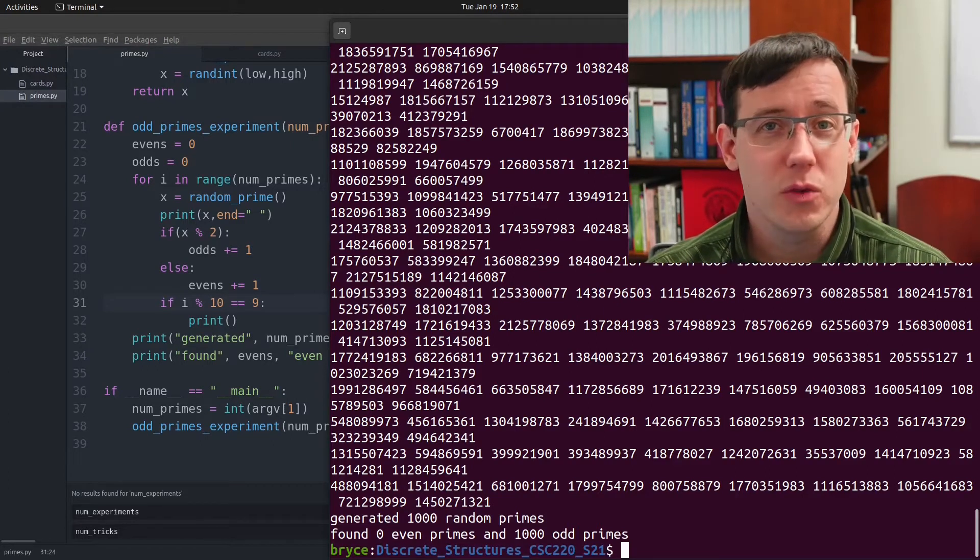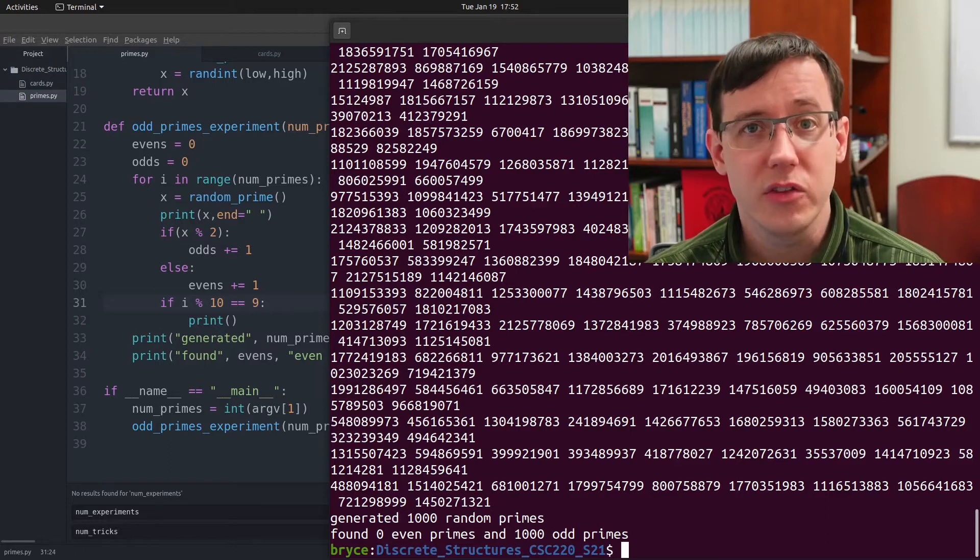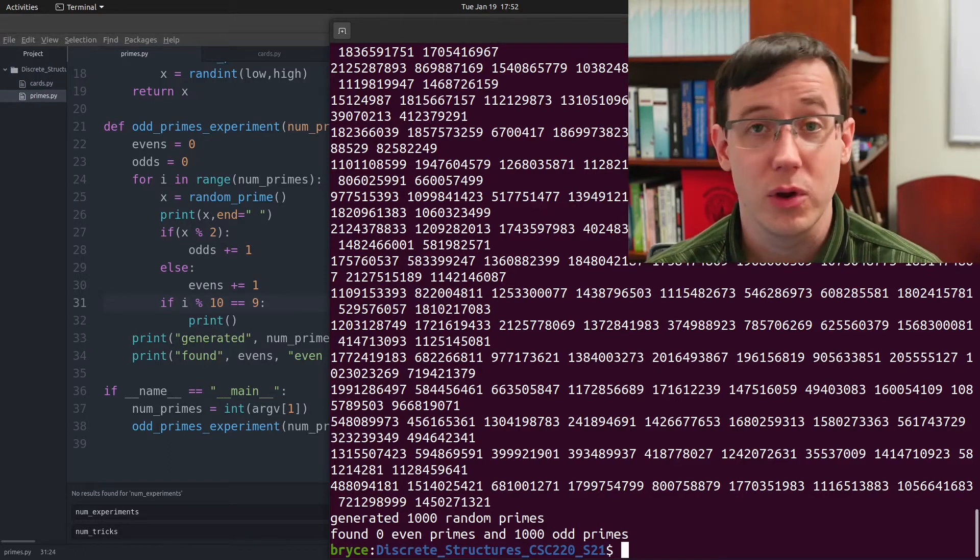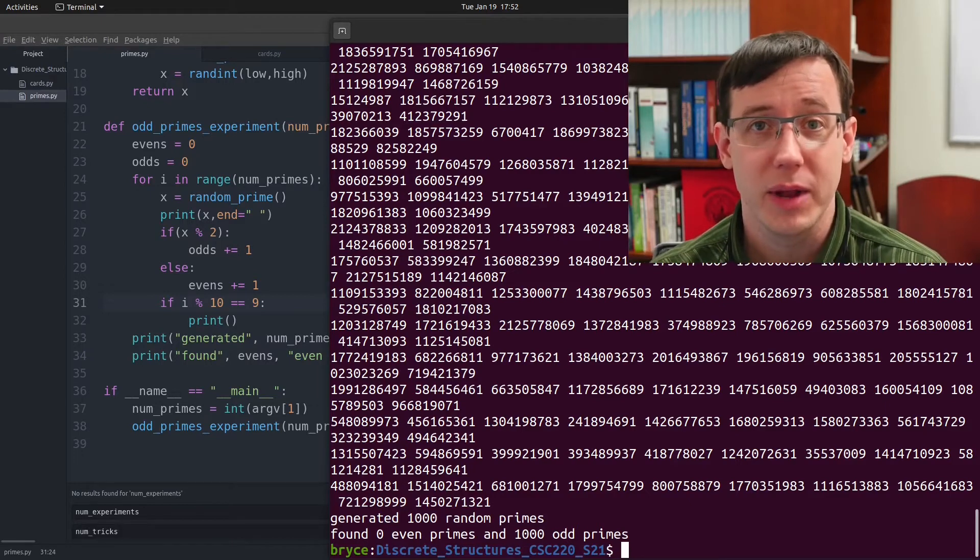So instead, let's go back to the whiteboard and see if we can come up with a convincing proof that the number of red cards in the top half will always be the same as the number of black cards in the bottom half.